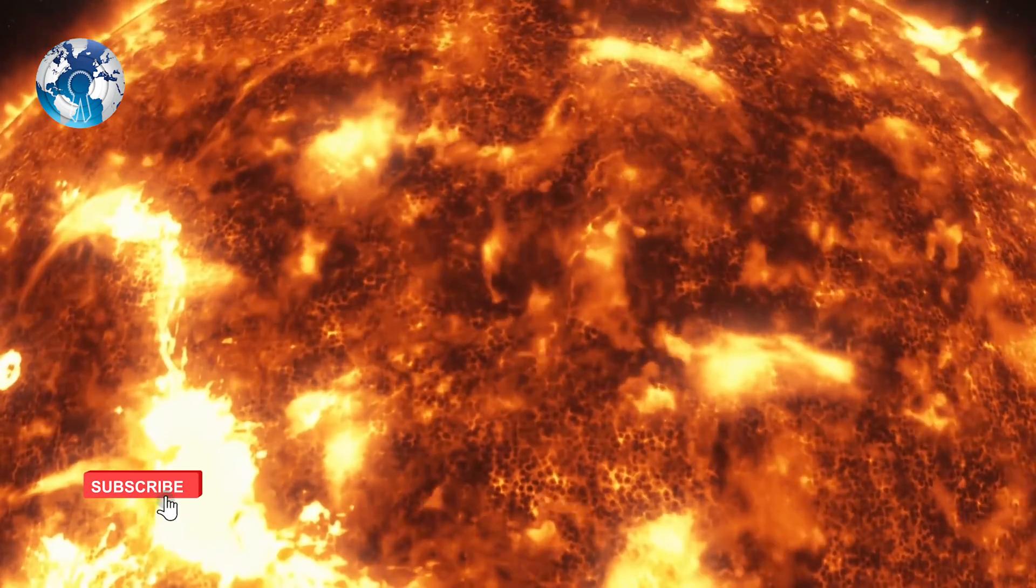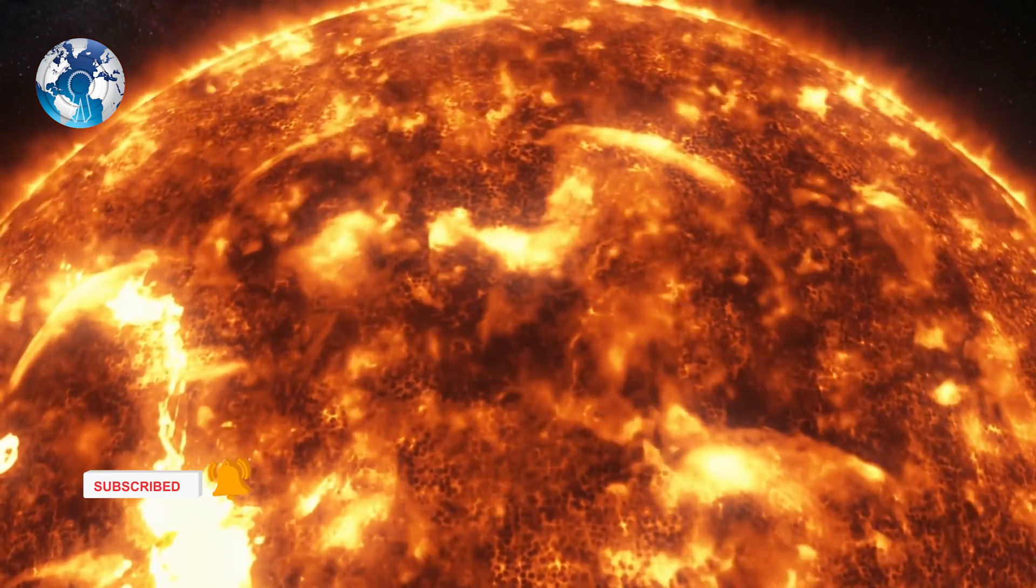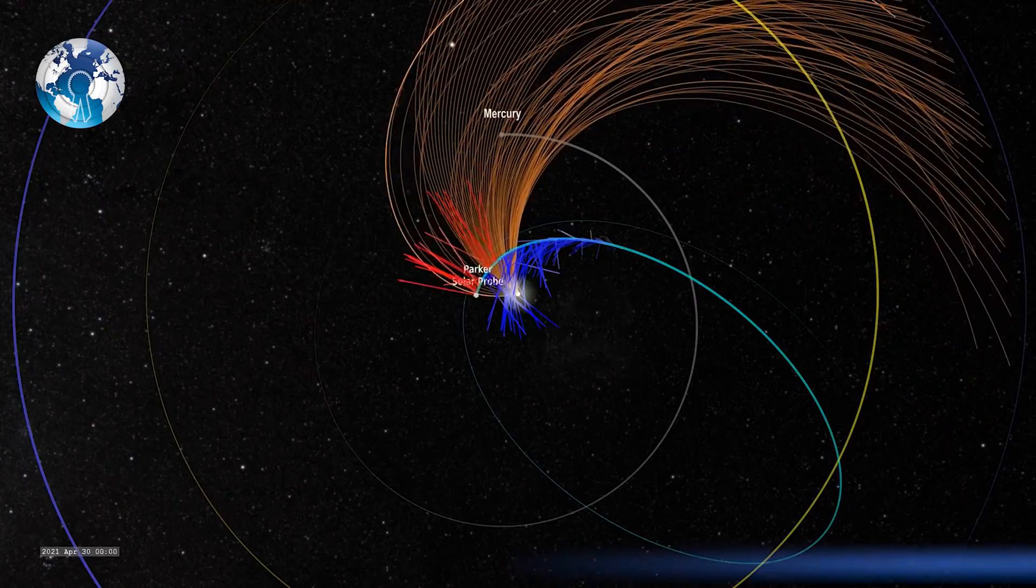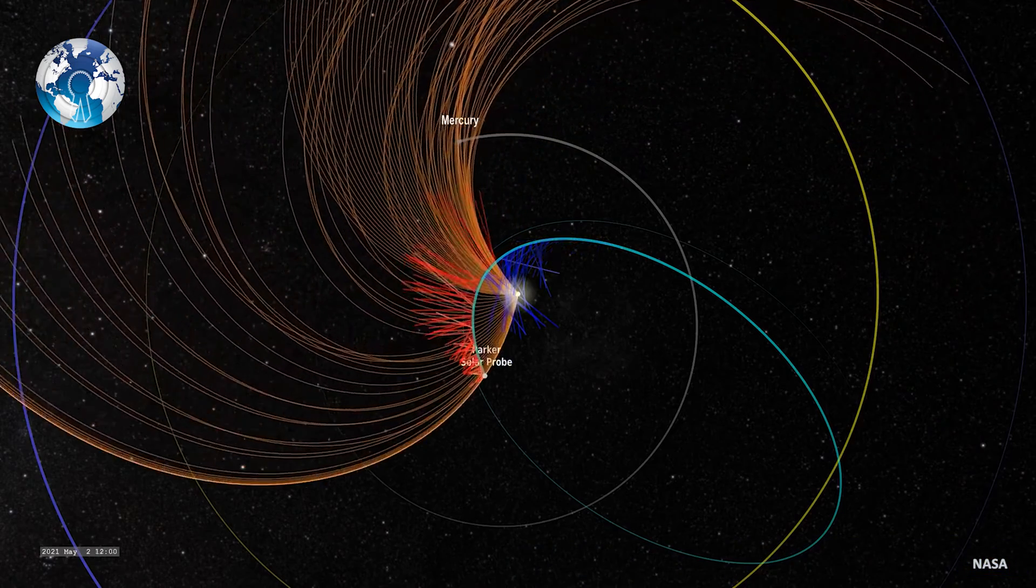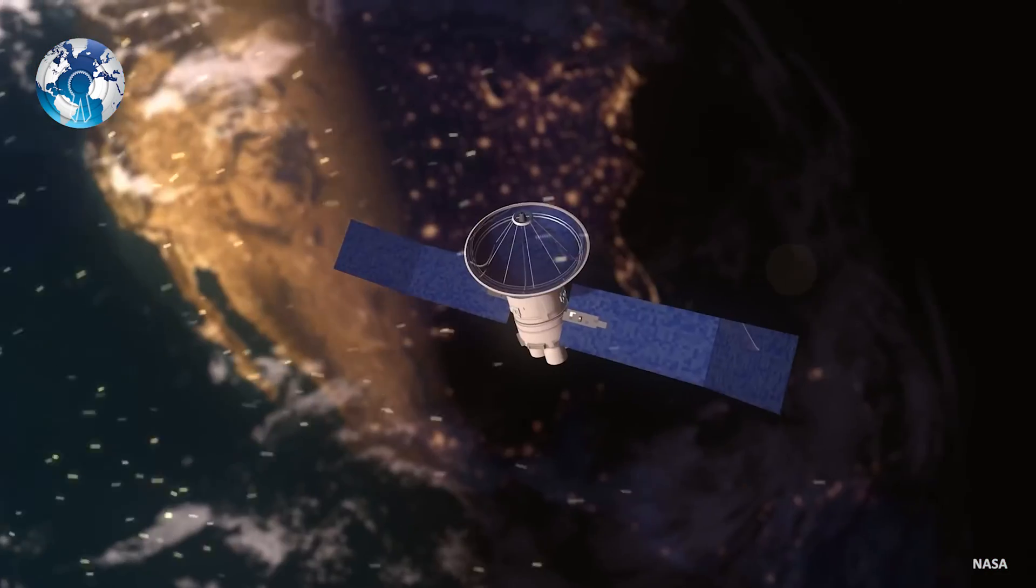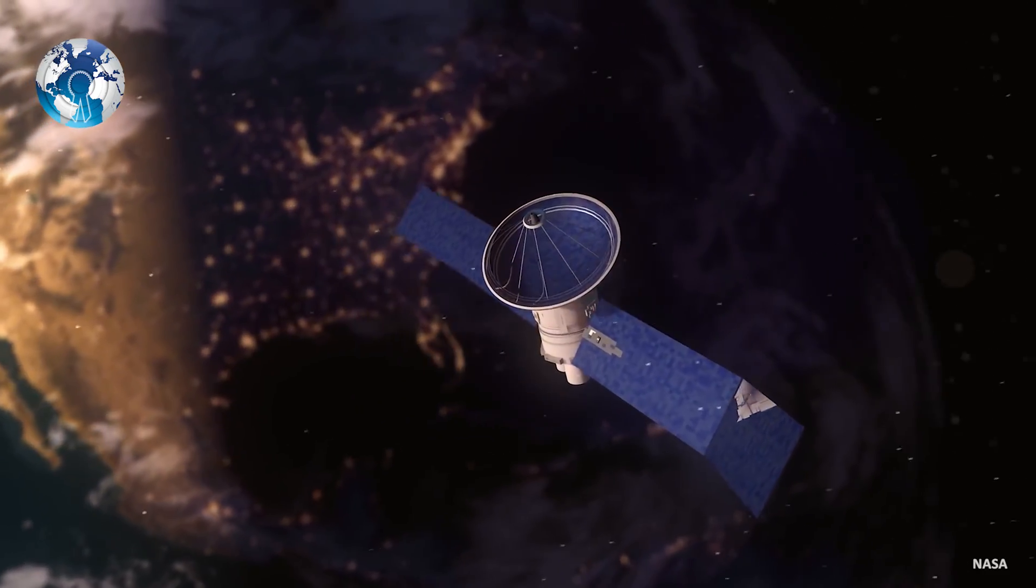Because the Sun lacks a solid surface, the corona is where the action is. Exploring this magnetically intense region up close can help scientists better understand solar outputs that can interfere with life here on Earth.